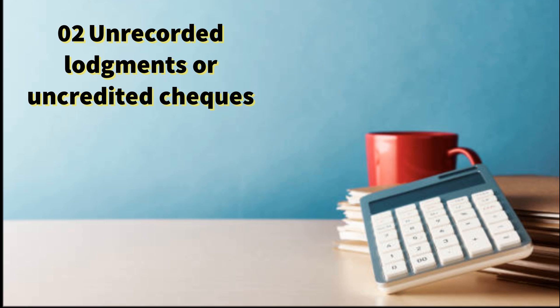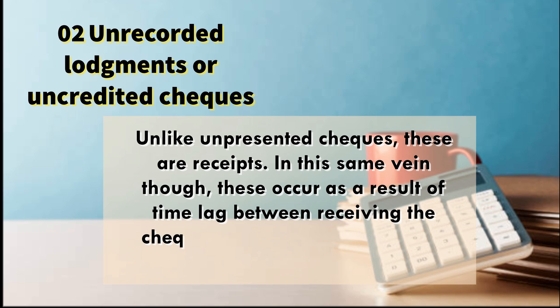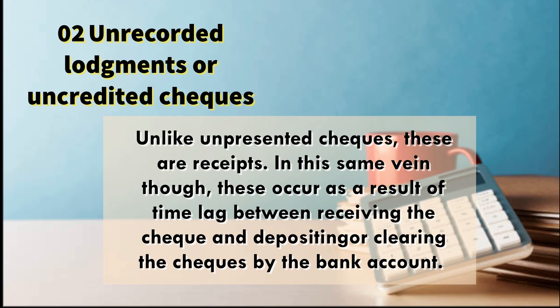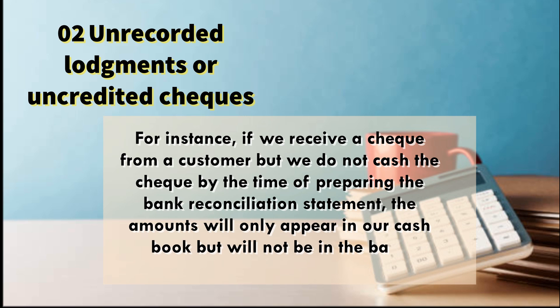Number two, unrecorded lodgements or uncredited checks. Unlike unpresented checks, these are receipts. In the same vein though, these occur as a result of time lag between receiving a check and depositing or clearing the check by the bank. For instance, if we receive a check from a customer, but we do not cash the check by the time of preparing the bank reconciliation statement, the amount will only appear in our cash book but will not be in the bank statement.